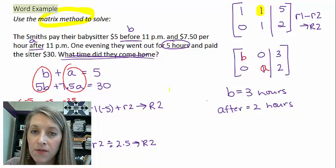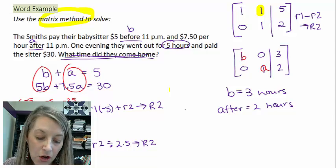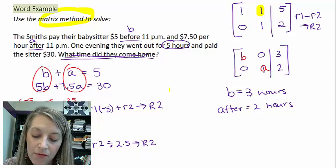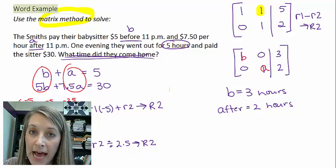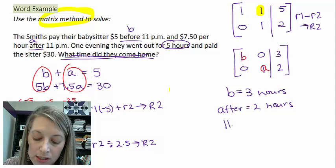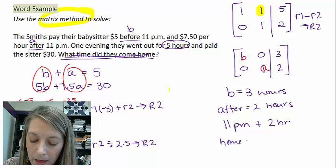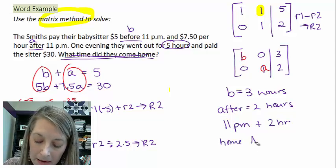Well, this doesn't answer that specifically, but it's very easy to figure out. So if they have 3 hours before and 2 hours after 11 p.m., we just take 11 p.m. and we just add 2 hours to it. And so that means they came home at 1 a.m.